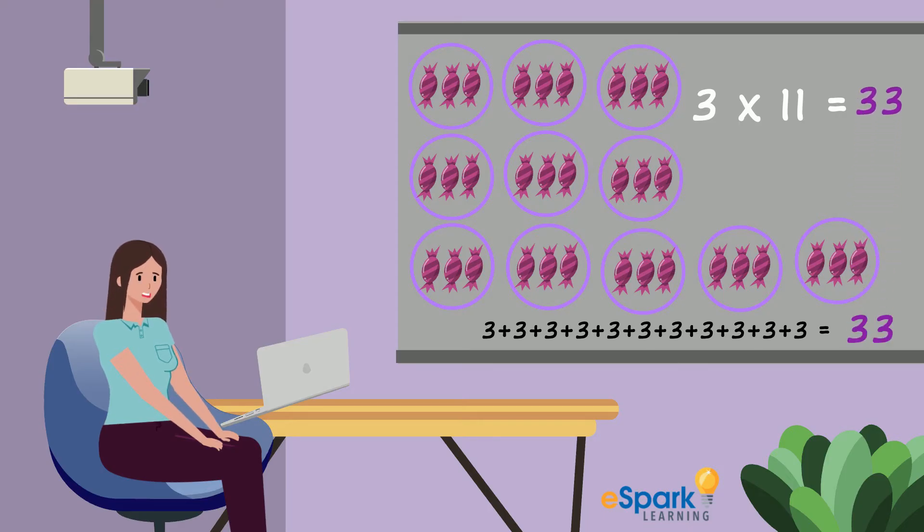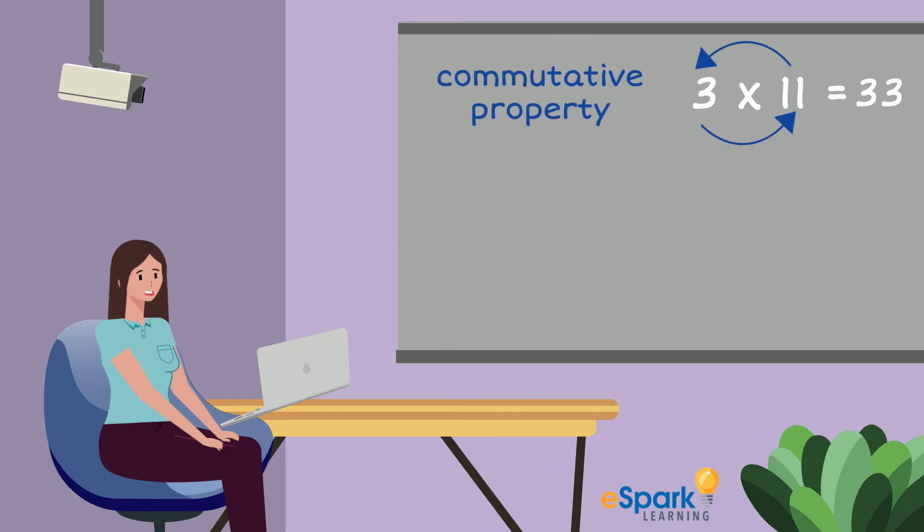I bet I could have done that faster. Since the commutative property says I can switch the factors and get the same answer, I can do 11 times 3. I can add 11 plus 11 plus 11 to get 33. Much faster.